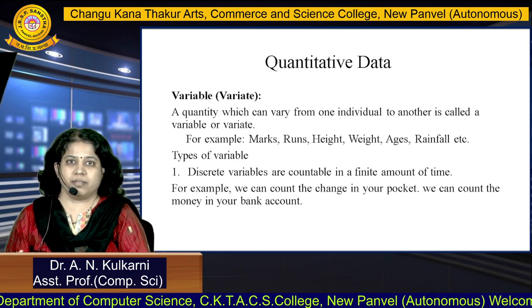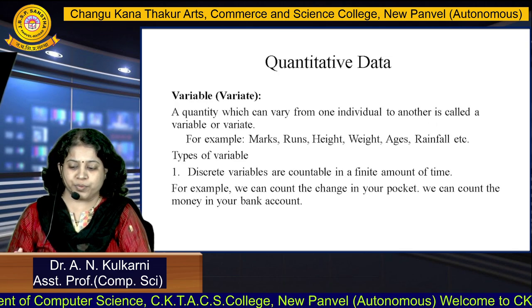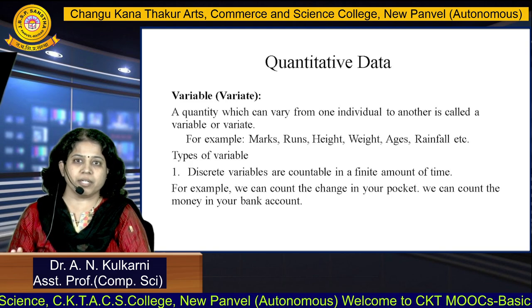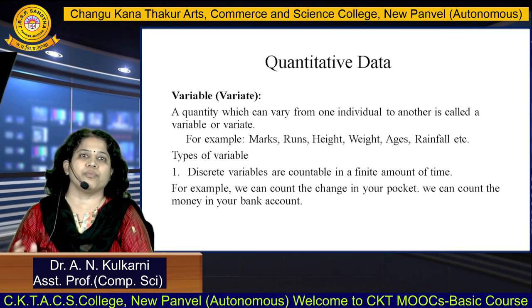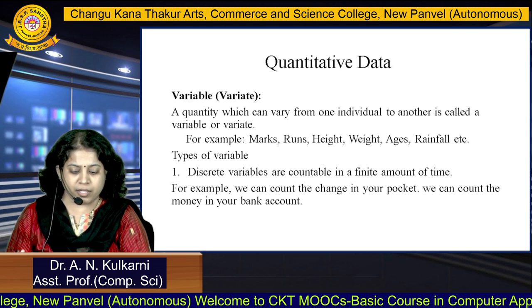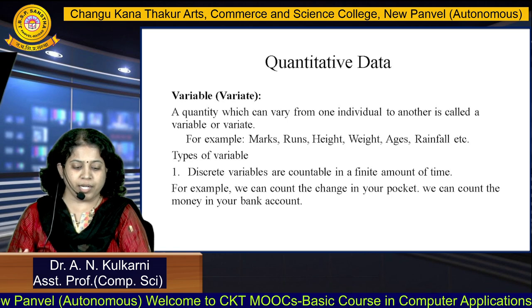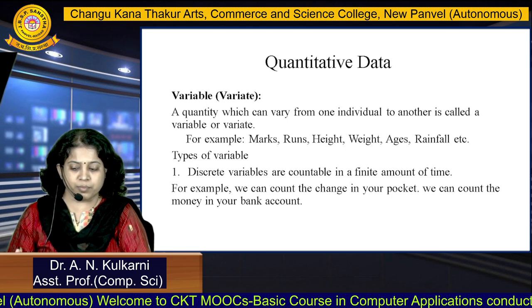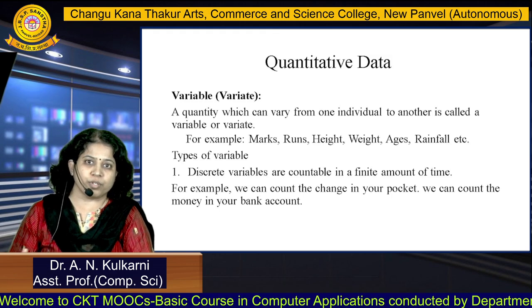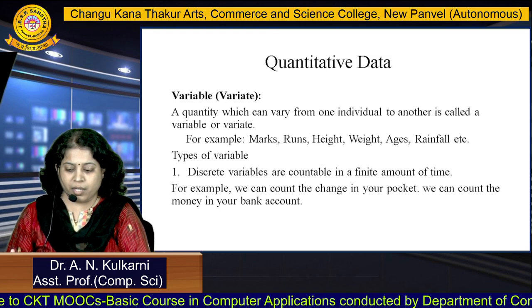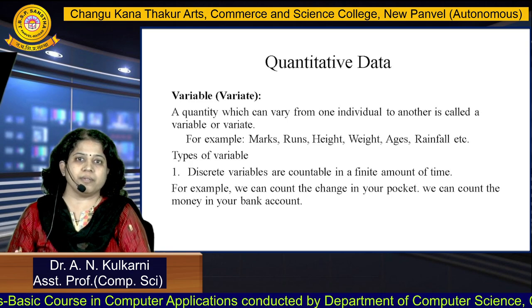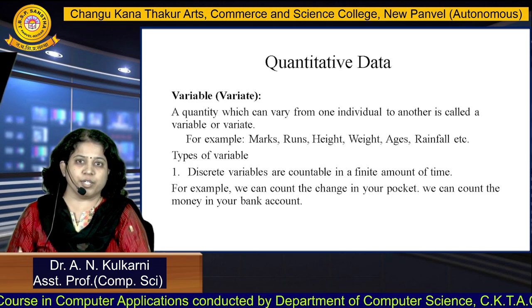Next, quantity of data. Under that, first we have to consider what is actually a variable. A variable is nothing but a quantity which can vary from one individual to another. For example, marks, runs, height, weight, age, rainfall — these all come under variables, as marks may be different for different students. Under this there are two types of variable: discrete variable and continuous variable.